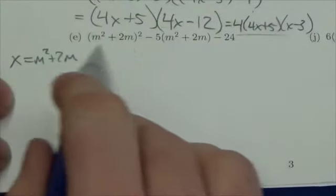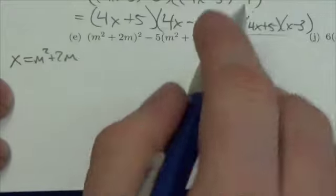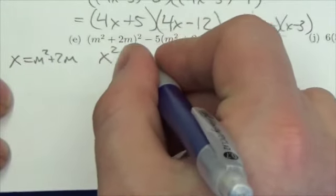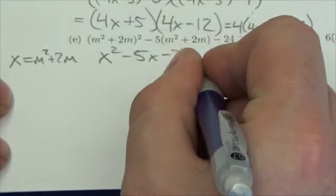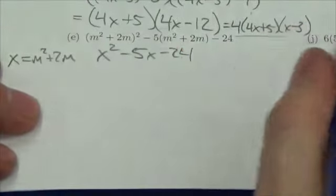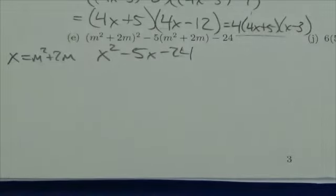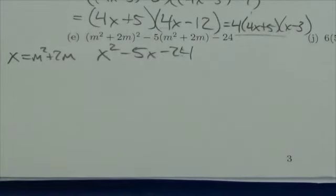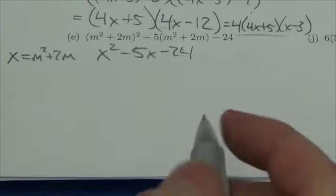And so what that allows me to do here is to replace that in this expression, and then I'll get x squared minus 5x minus 24. So at least now I'm looking at just the quadratic form of this question here.